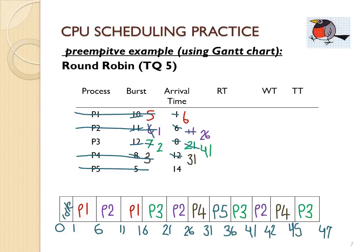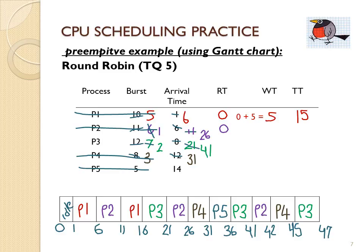At time 47, all processes have completed execution. Now we calculate the metrics from the Gantt chart. P1 arrived at time 1 and finished at time 16, giving a turnaround time of 15 and a wait time of 5 — it spent 10 time units on the CPU and 5 waiting. P2 arrived at time 6, has a response time of 0, finished at time 42, giving a turnaround time of 36 and a wait time of 25 — 11 time units on the CPU and 25 waiting.